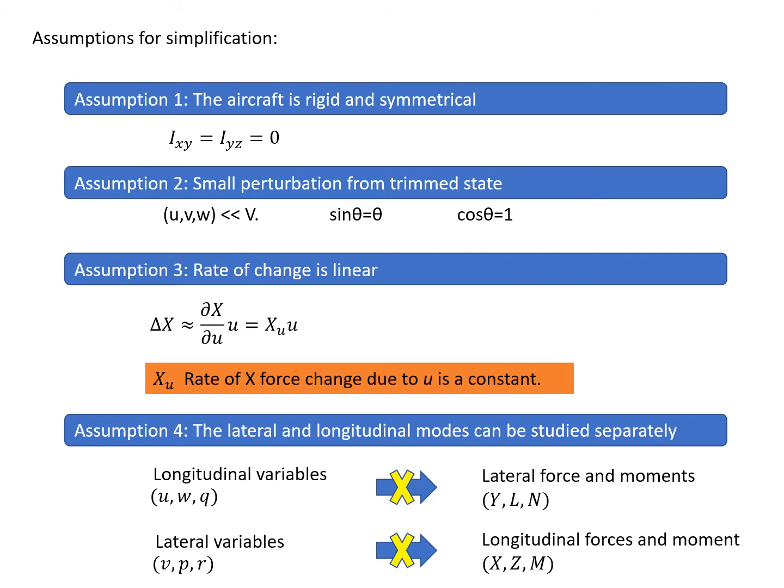This is very important. We have six equations of motion in total, combining both longitudinal and lateral modes. Since these modes can be studied separately according to the fourth assumption, we can group the six equations into two groups, each containing three. For example, longitudinal variables u, w, and q won't give rise to any change in lateral force or moment. Similarly, lateral variables v, p, r won't give rise to any change in longitudinal force or moment.